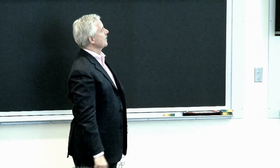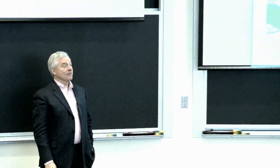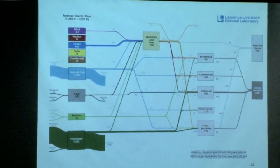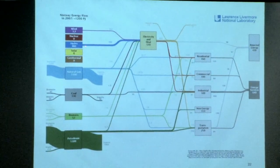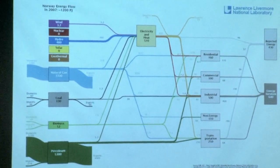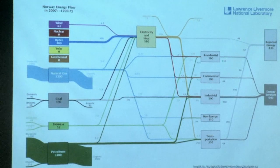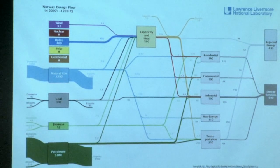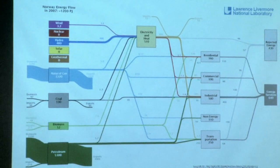This is Norway. The big thing in electricity is hydro, as we discussed earlier. Norway is lucky — they have a lot of natural gas, most of which they export, and a lot of oil, most of which they export. They use some natural gas and some oil to generate electricity, and apparently even burn some wood. But mostly they rely on hydropower and export the natural gas and the oil.